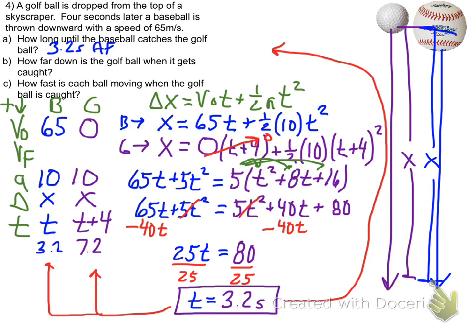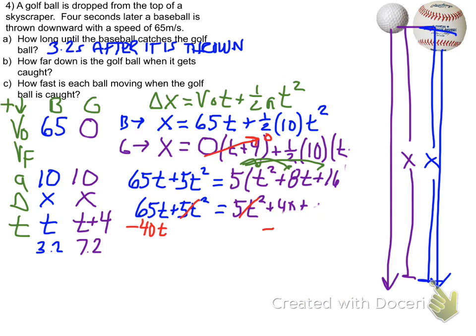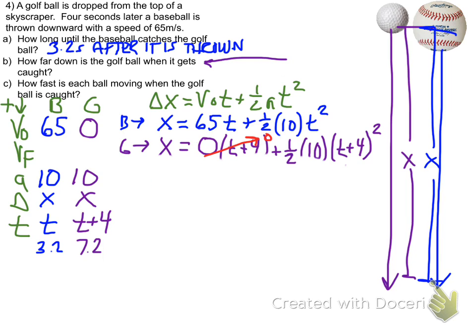Then we bring that back up and write our answer in. Now let's look at how far down the golf ball is when it gets caught. Well we have our x equation for the golf ball. We just need to substitute our values now.